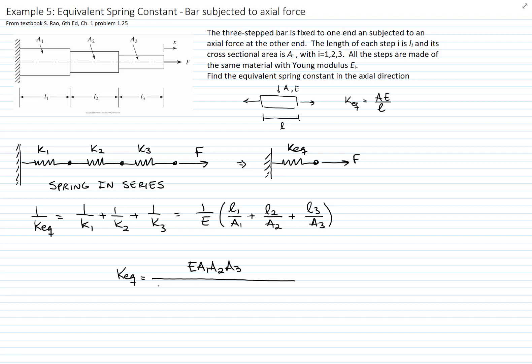If we do the algebra and we take the inverse of these three fractions, we get the following result. E times the three areas, a1, a2, and a3, divided by the three terms, l1, a2, a3, plus l2, a1, a3, plus l3, a1, a2. And this is the equivalent springs constant for a bar subjected to axial load.